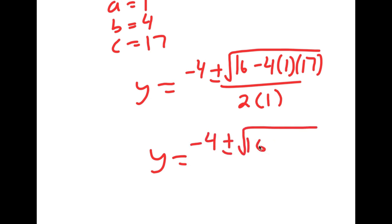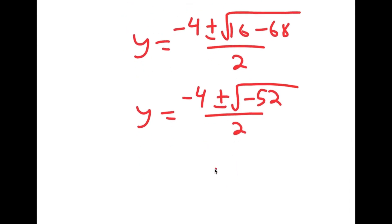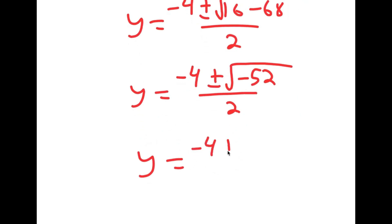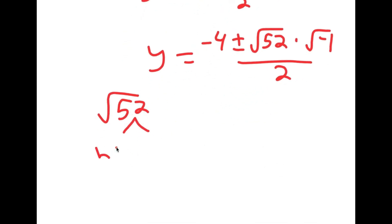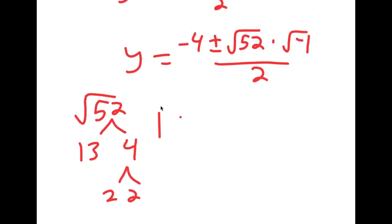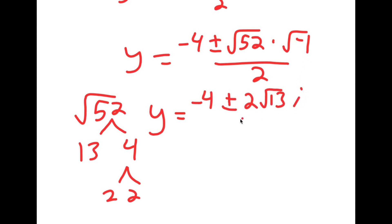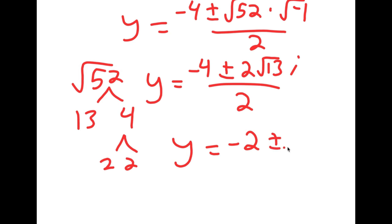This is equal to negative 4 plus or minus the square root of 16 minus 68 over 2, which is equal to negative 4 plus or minus the square root of negative 52 over 2. This equals negative 4 plus or minus the square root of 52 times the square root of negative 1 over 2. The square root of 52 simplifies to 2 root 13, since 52 equals 13 times 4. So y is equal to negative 4 plus or minus 2 root 13 times i, all over 2. Dividing both terms by 2, I get y equals negative 2 plus or minus the square root of 13 times i.